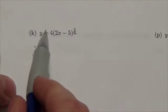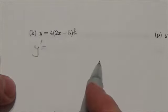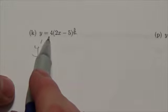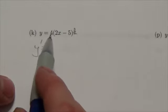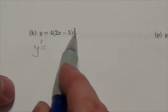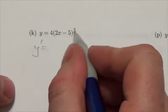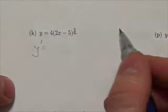So y' is going to equal... Now, notice that 4 up front there. Don't treat that as a function multiplied by this. Just treat that as a coefficient. So the first thing I'm going to do is multiply by the exponent of the 3 halves. So I'm going to bring down the 3 halves of 4.